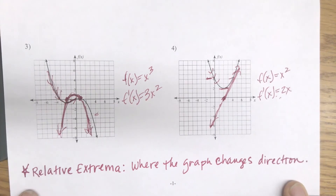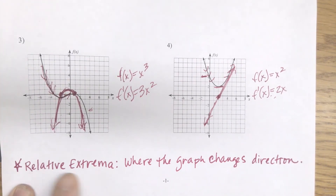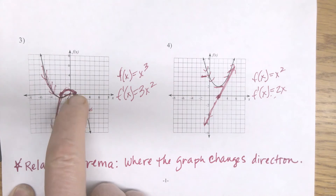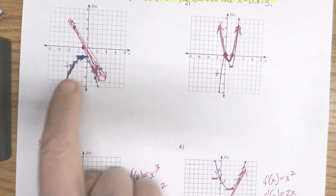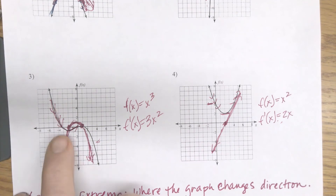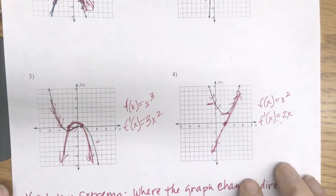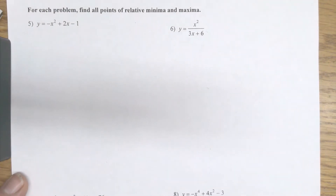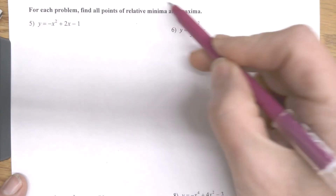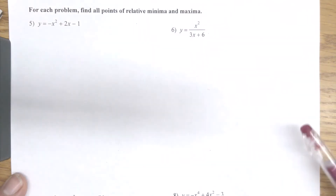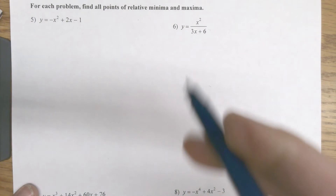The important part we're looking at is where the graph changes direction, and we're going to be looking for something called relative extrema — relative extreme values. Relative extrema is where the graph changes direction, so it's a little local low point or high point in the graph. When it changes direction, that's when the slope of the tangent is 0, so in order to find these points we want to find when the slope is 0. The slope is the derivative, so to find the relative minima and maxima — relative extrema — I need to find when the derivative is 0.